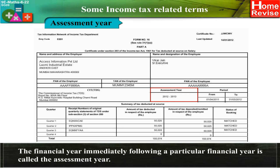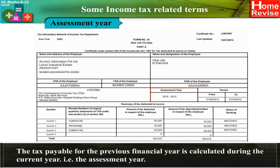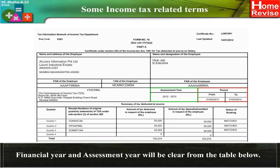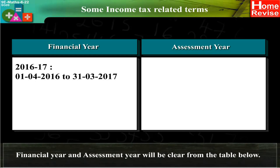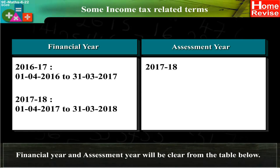Assessment Year: The financial year immediately following a particular financial year is called the assessment year. The tax payable for the previous financial year is calculated during the current year, i.e., the assessment year. For example, Financial Year 2016–2017 (1st April 2016 to 31st March 2017) has Assessment Year 2017–2018. Financial Year 2017–2018 (1st April 2017 to 31st March 2018) has Assessment Year 2018–2019.